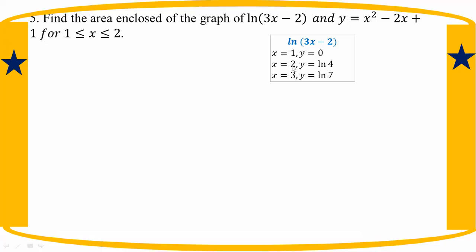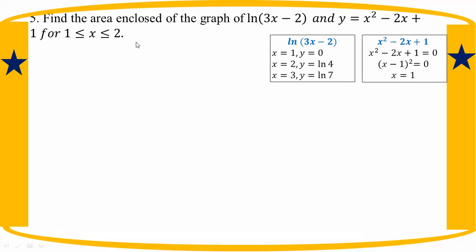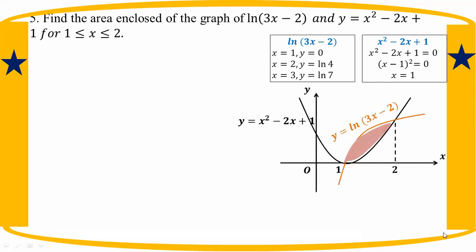For the h-intercept, set h squared minus 2h plus 1 equal to 0. This factors as h minus 1 equals 0, and h minus 1 equals 0 again, so h is equal to 1.